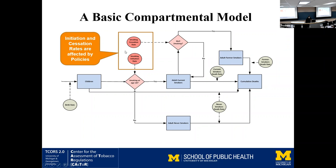The initiation and cessation rates can be influenced by policy. We can have modules that say we raised taxes, prices went up, and we know the influence on cessation and initiation rates because we've measured the price elasticity of demand for these products. Depending on the magnitude of the tax, we can figure out how initiation and cessation rates are going to move, and therefore these flows will be altered. Then we can compare the progress of this stock over time — doing nothing versus implementing some policies.